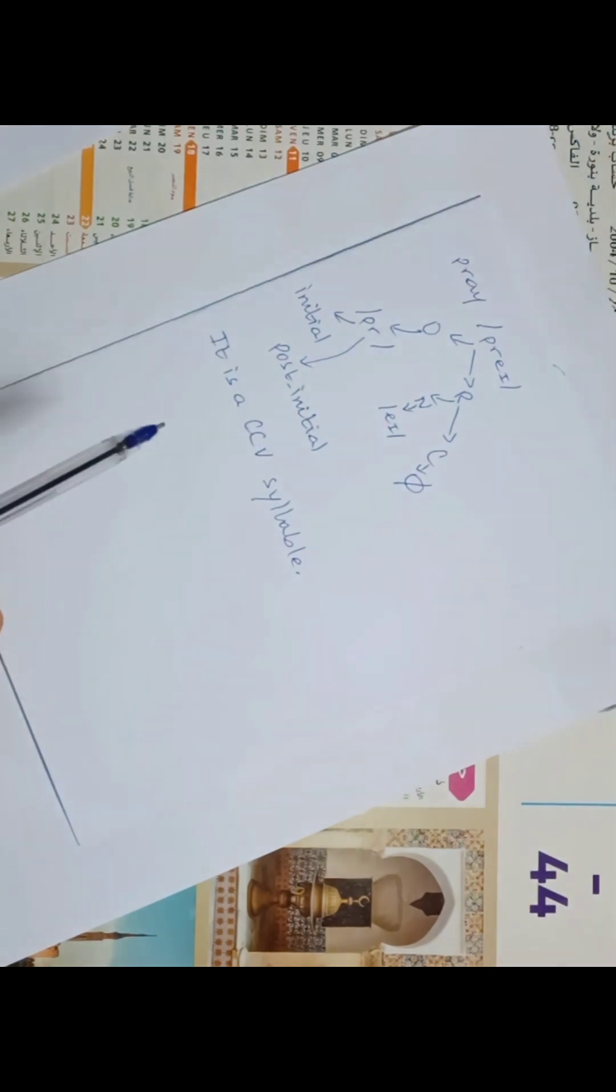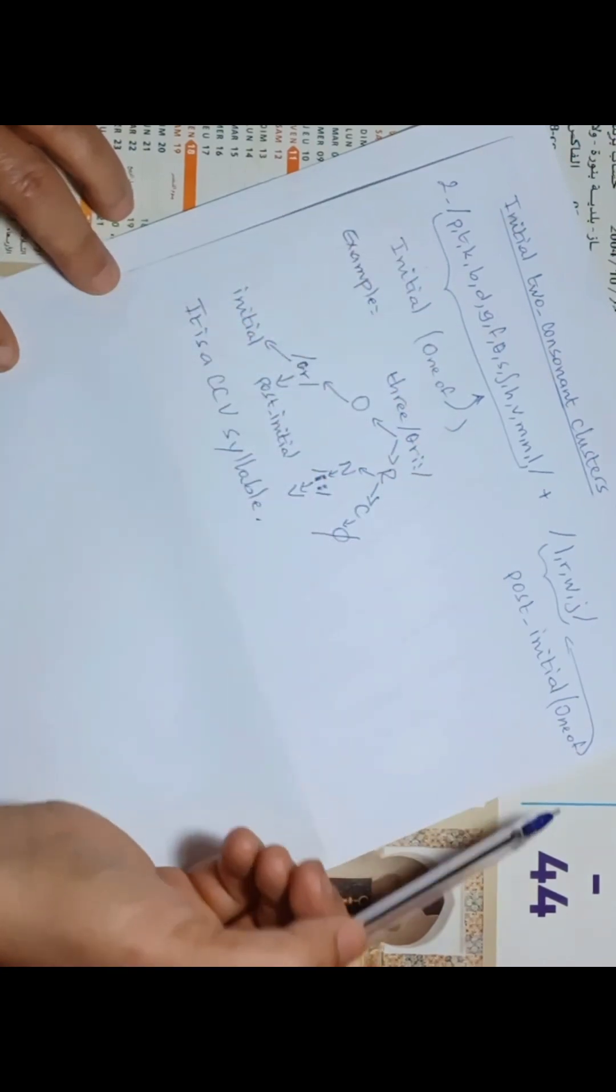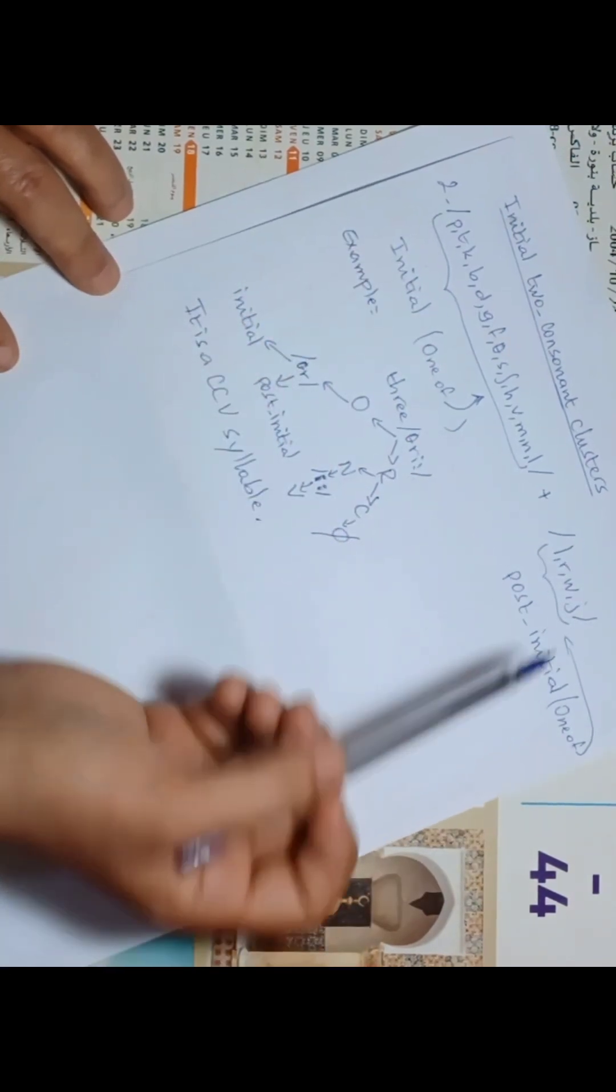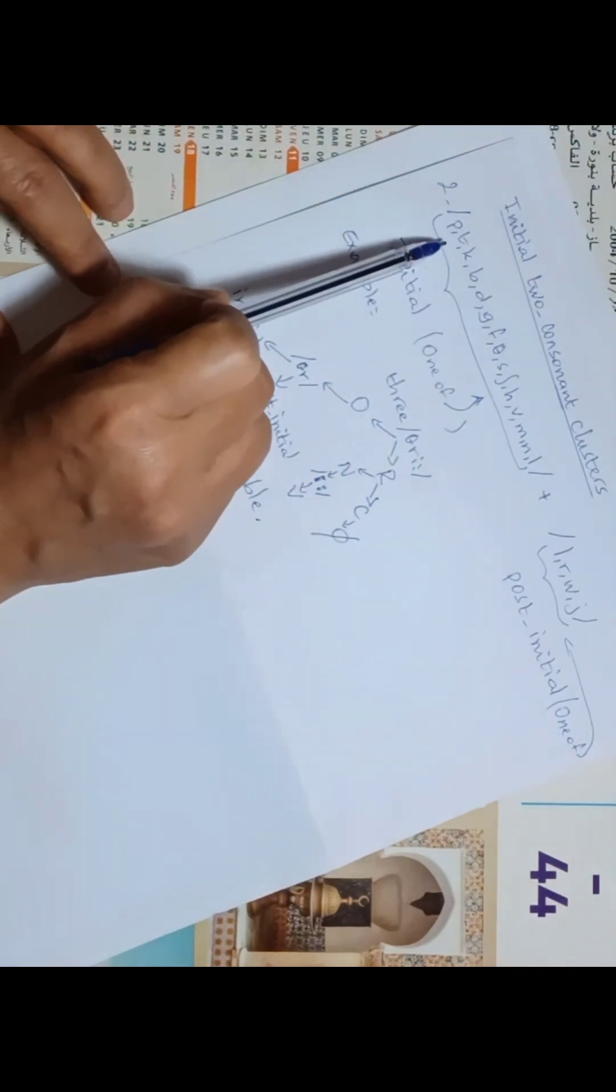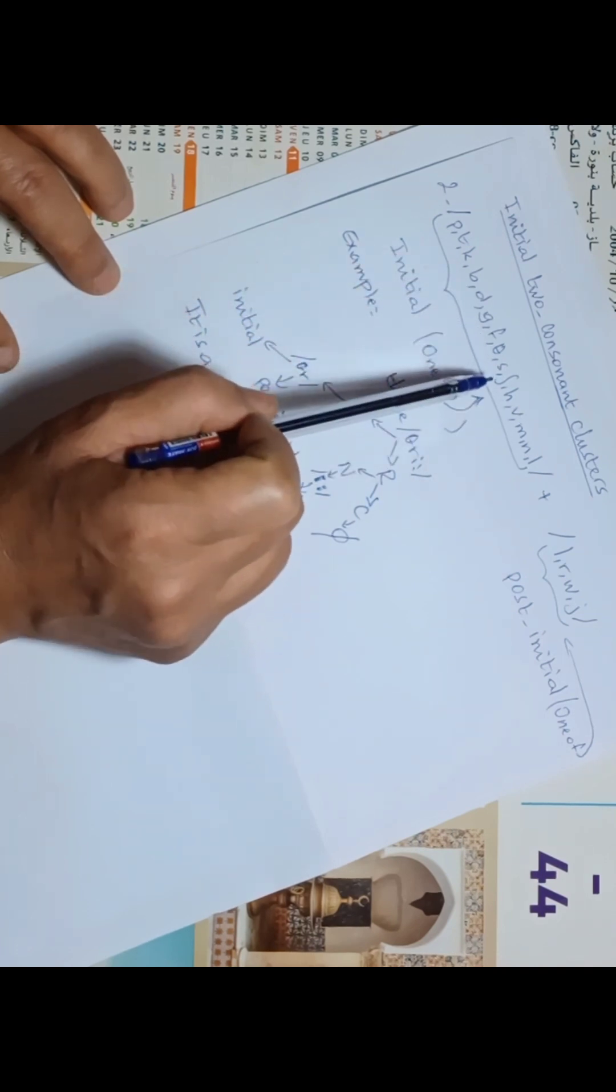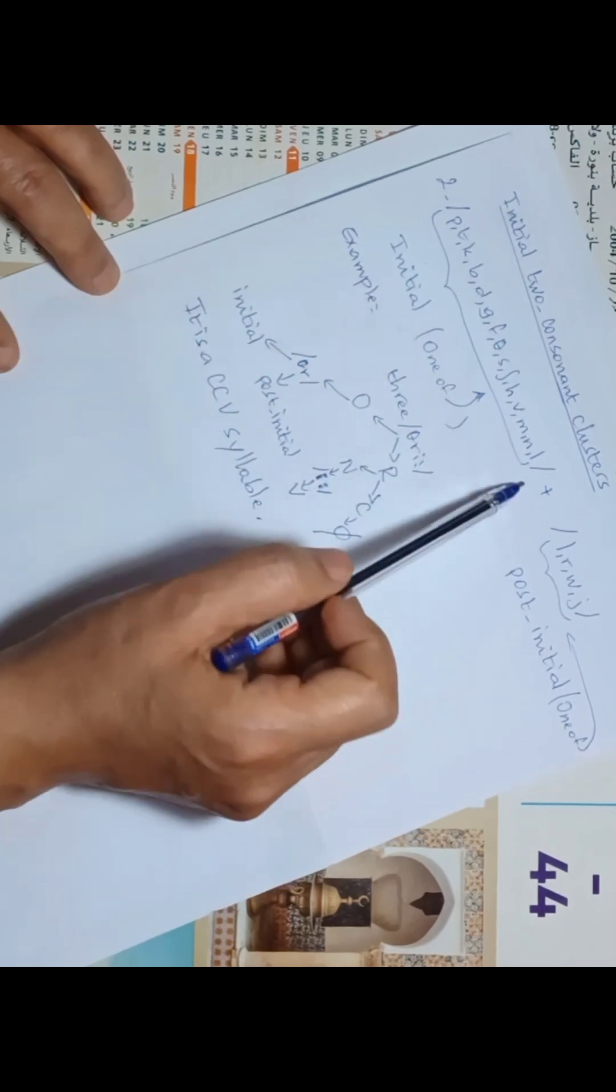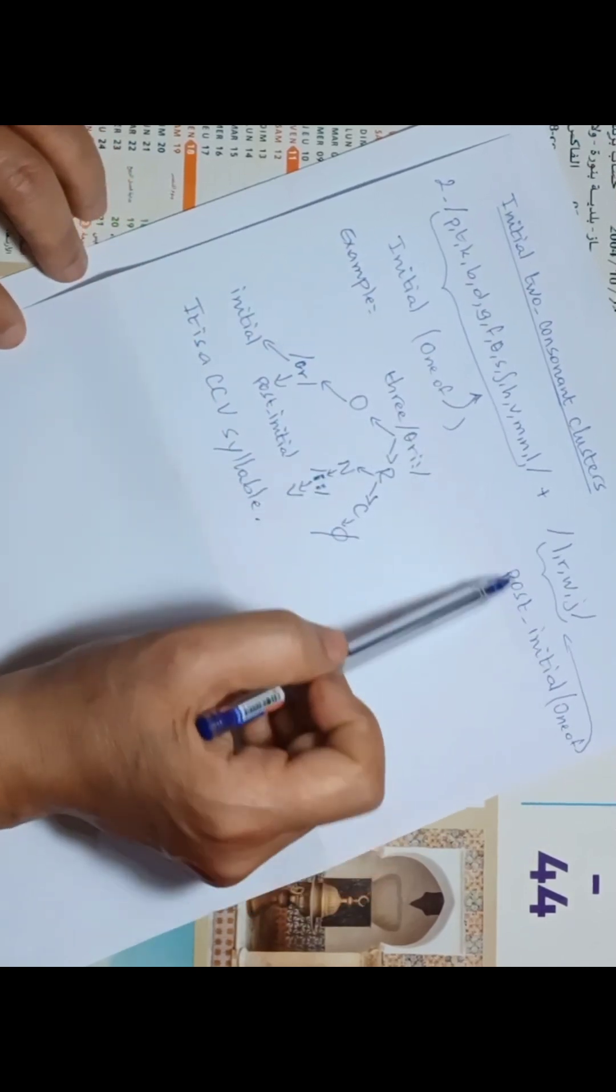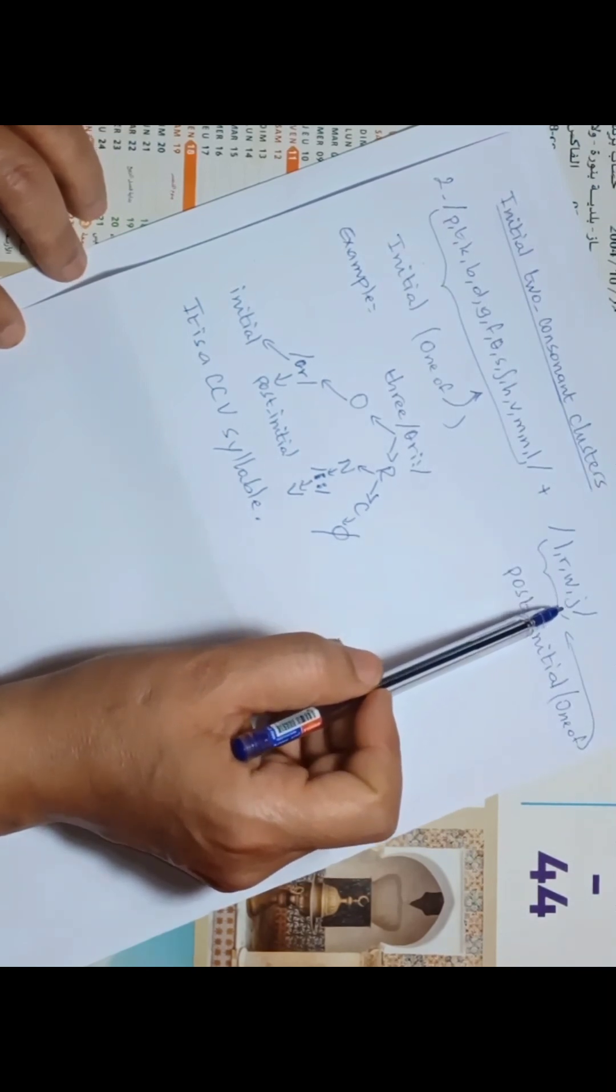Here is the rule for initial two-consonant clusters. This syllable may begin with one of these sounds: /p/, /t/, /k/, /b/, /d/, /g/, /f/, /θ/, /s/, /ʃ/, /v/, /m/, /n/, /l/ - plus one of these sounds: /l/, /r/, /w/, or /j/.